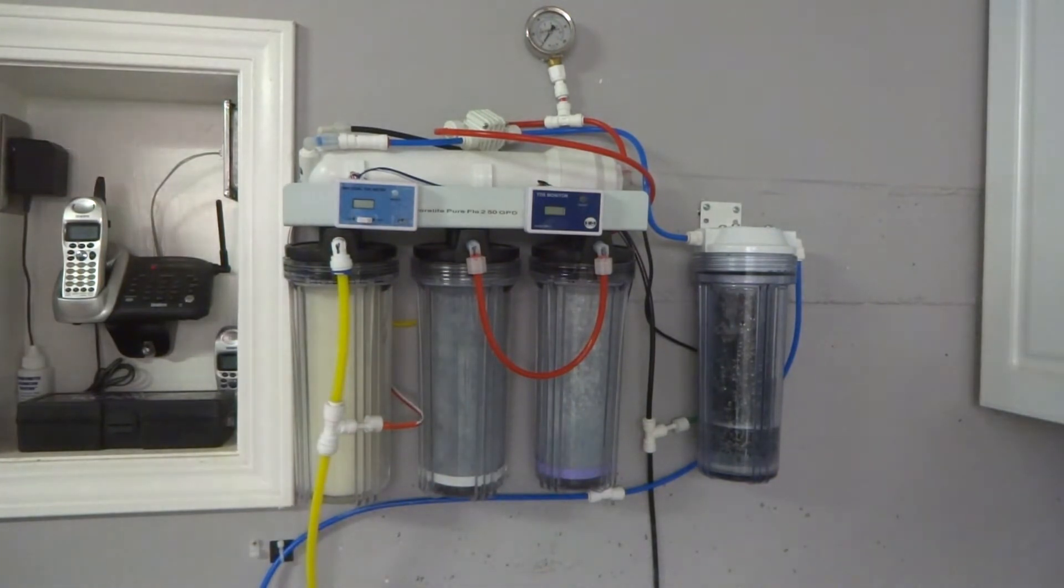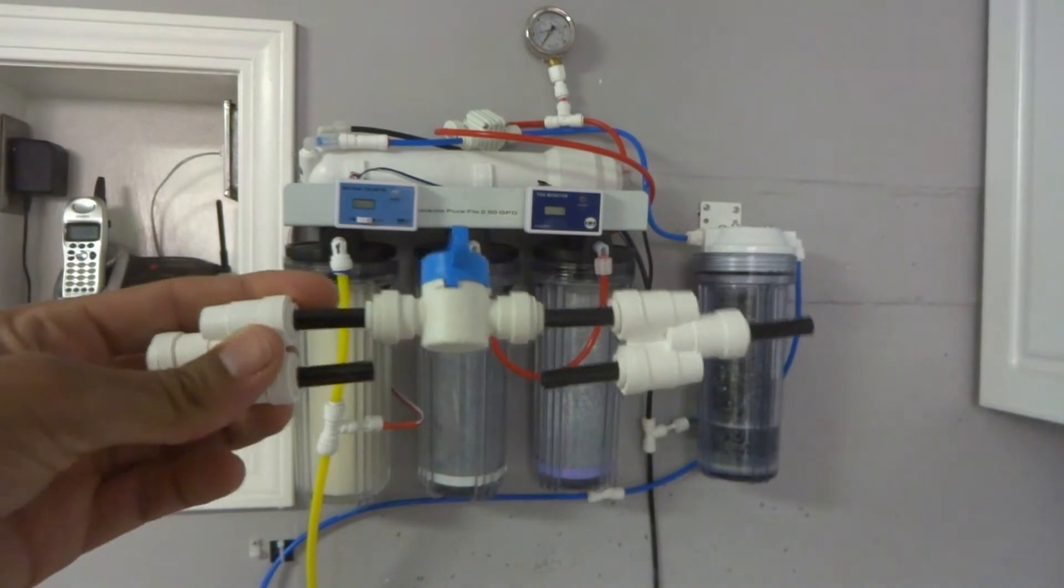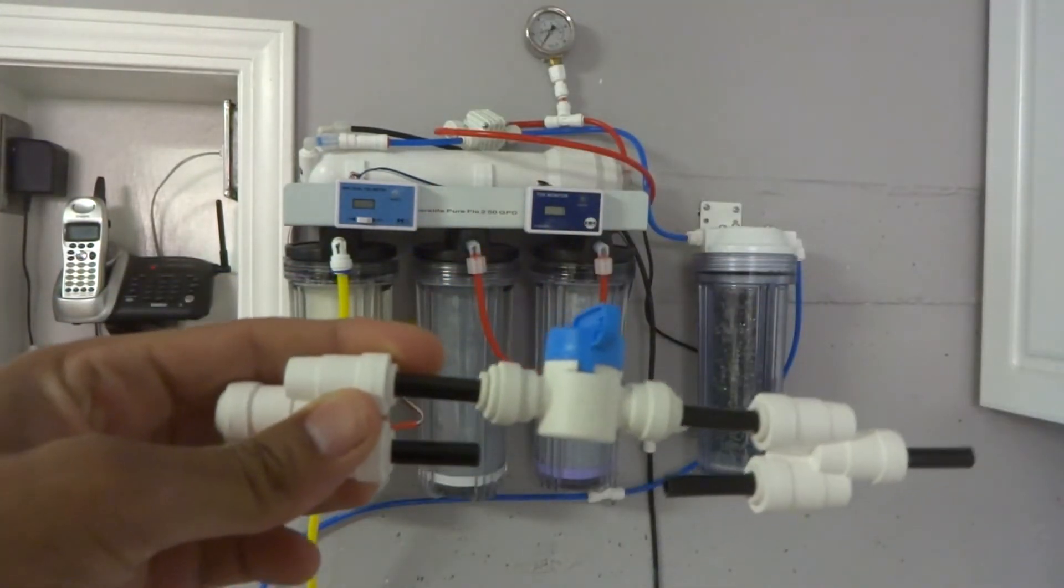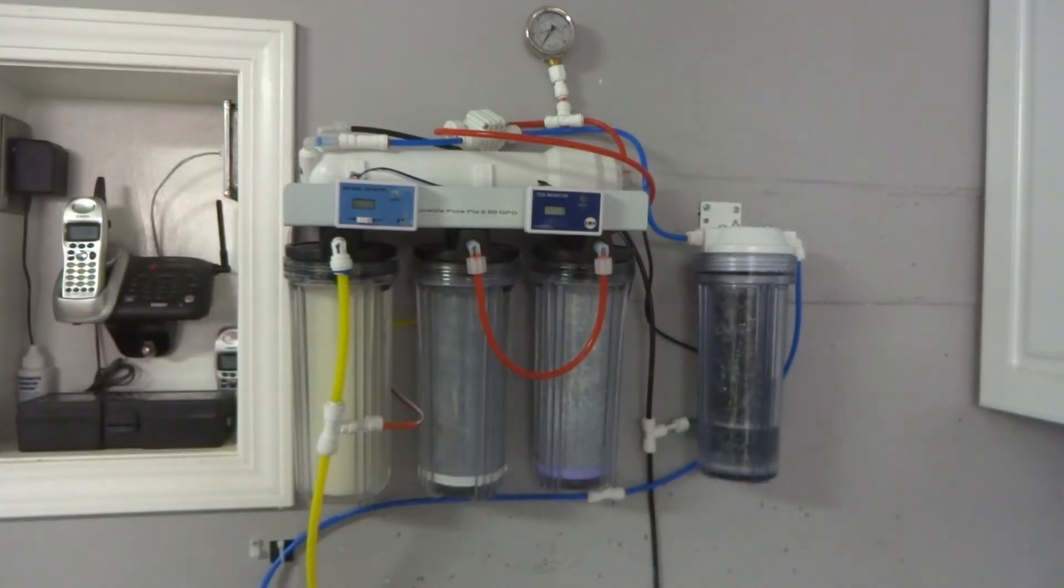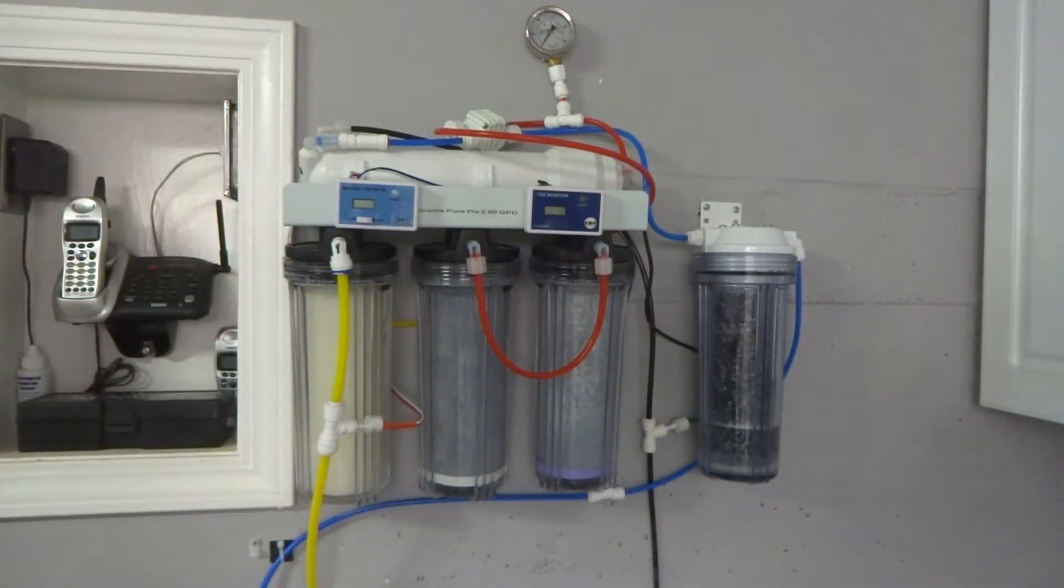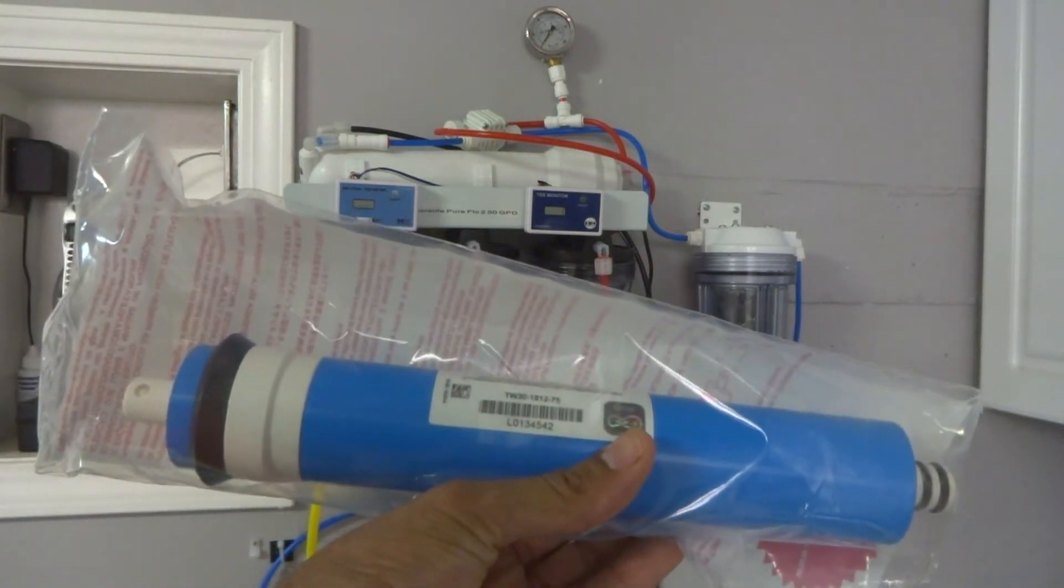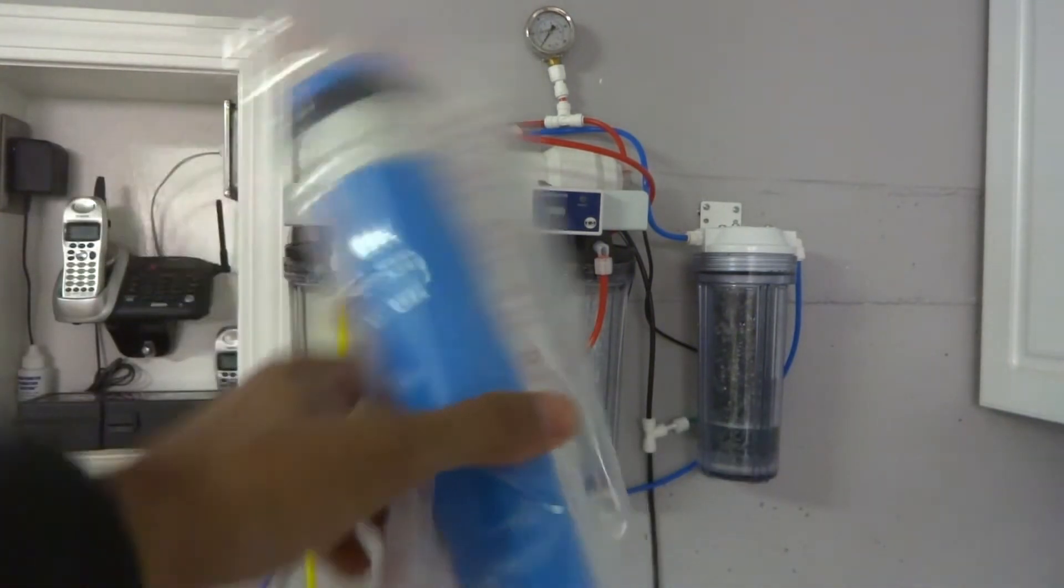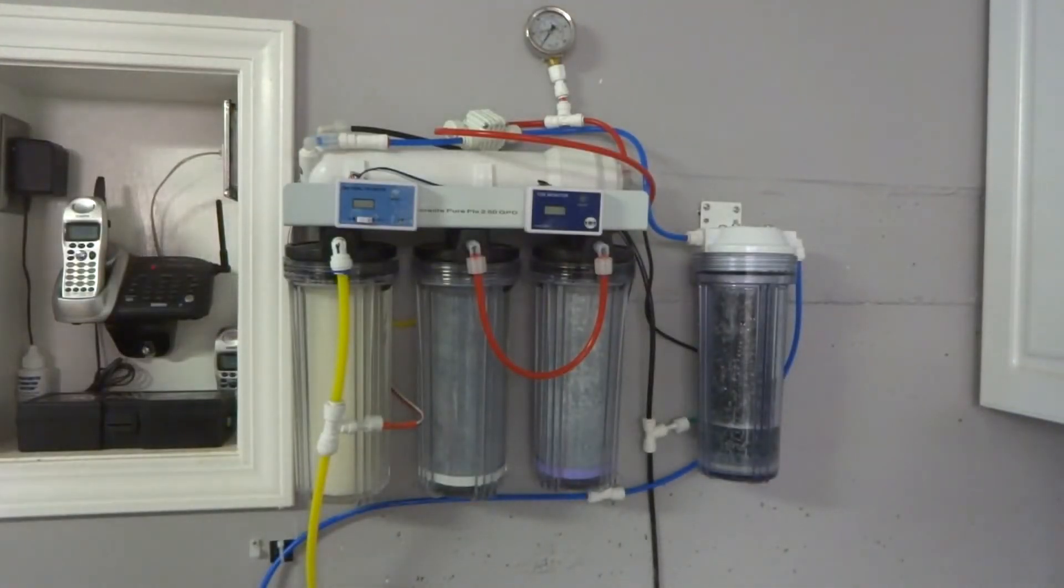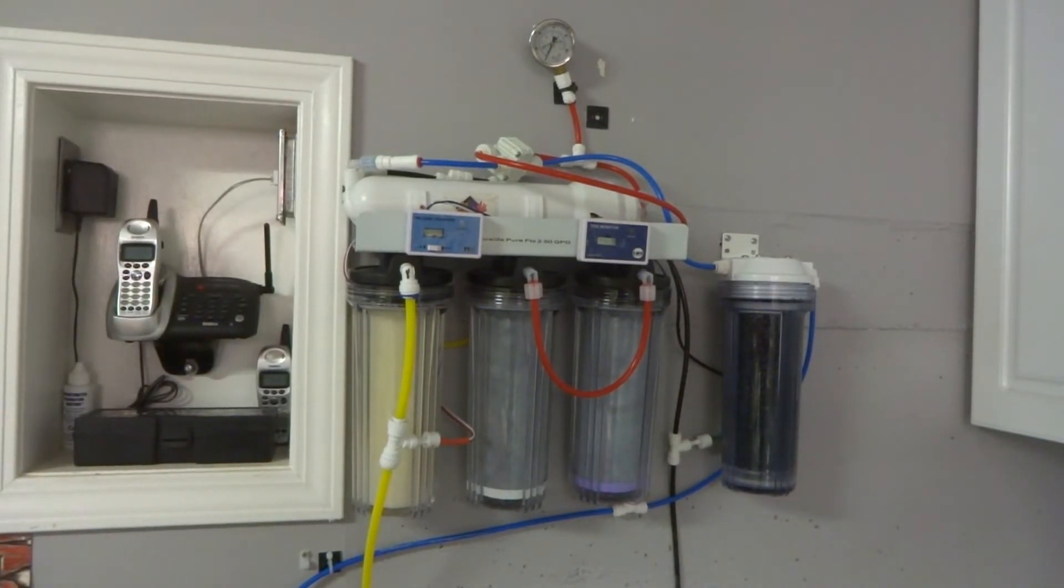I'm also installing a flush kit for the membrane. The flush kit is great because you turn this valve here and it releases all the water from the membrane so it gives it a longer life and longevity. The membrane itself is going to be installed today as well. It's just a 75 gallon per day membrane. It's pretty basic.